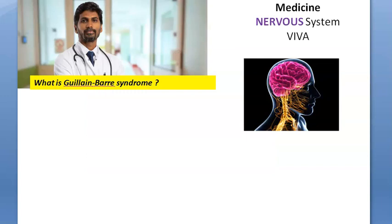What is Guillain-Barré syndrome? Guillain-Barré syndrome is a rare disorder where the body's immune system attacks the nerves — it attacks our own nerves.